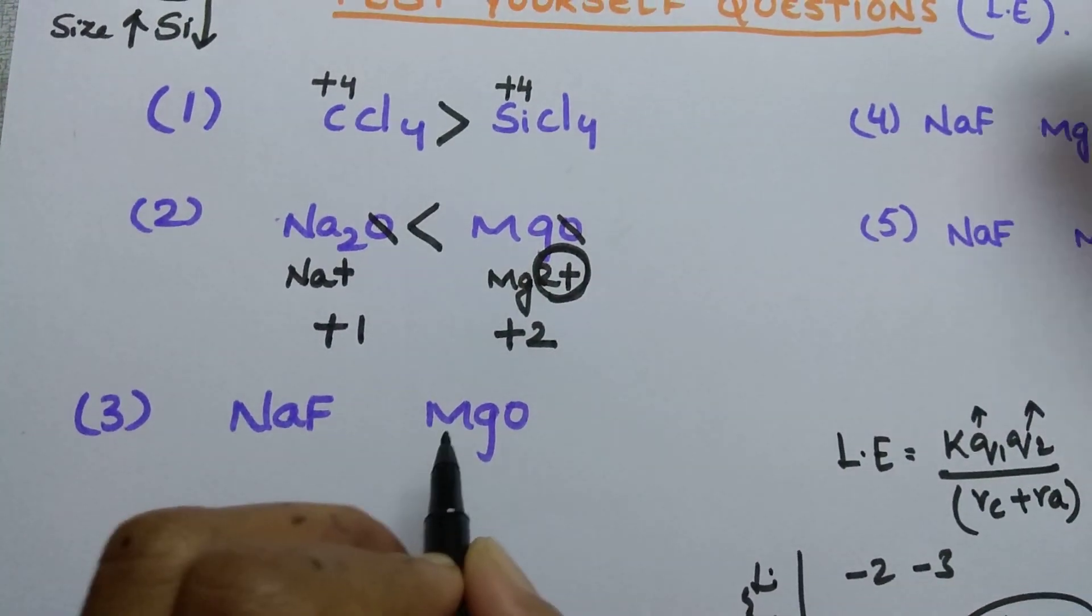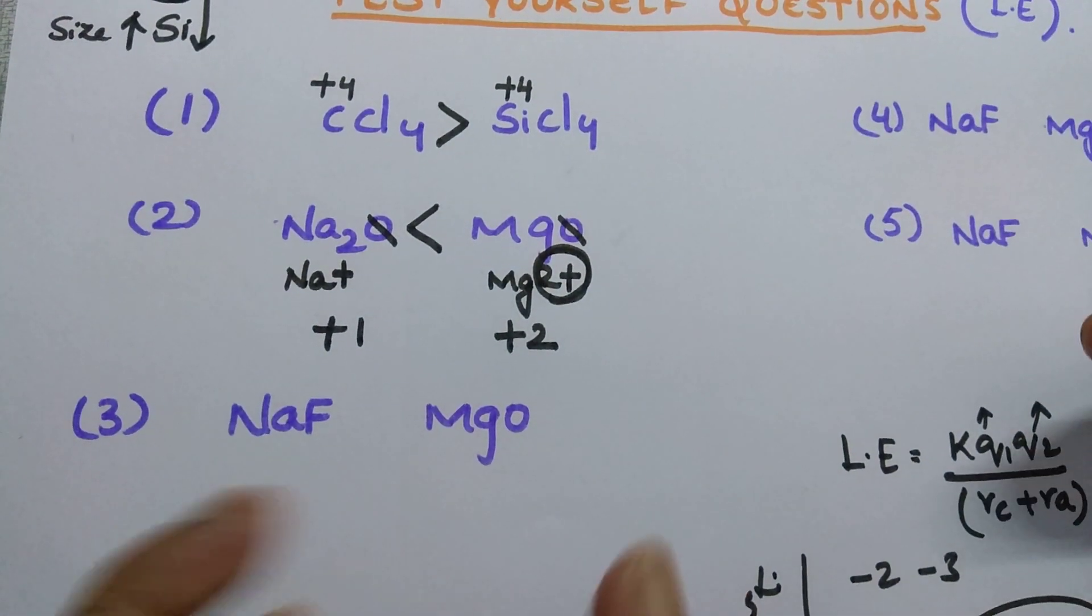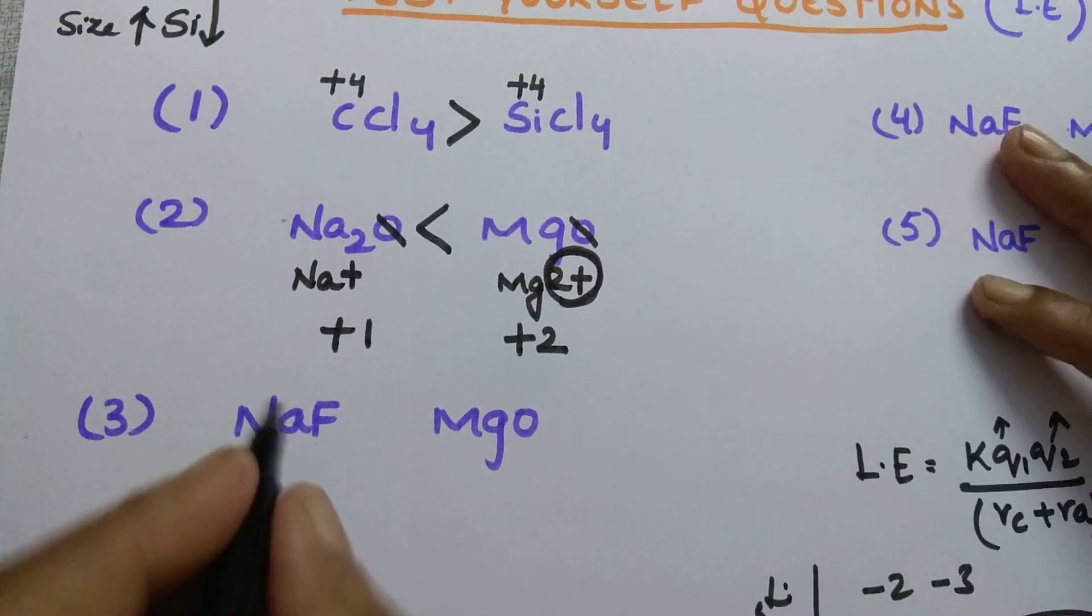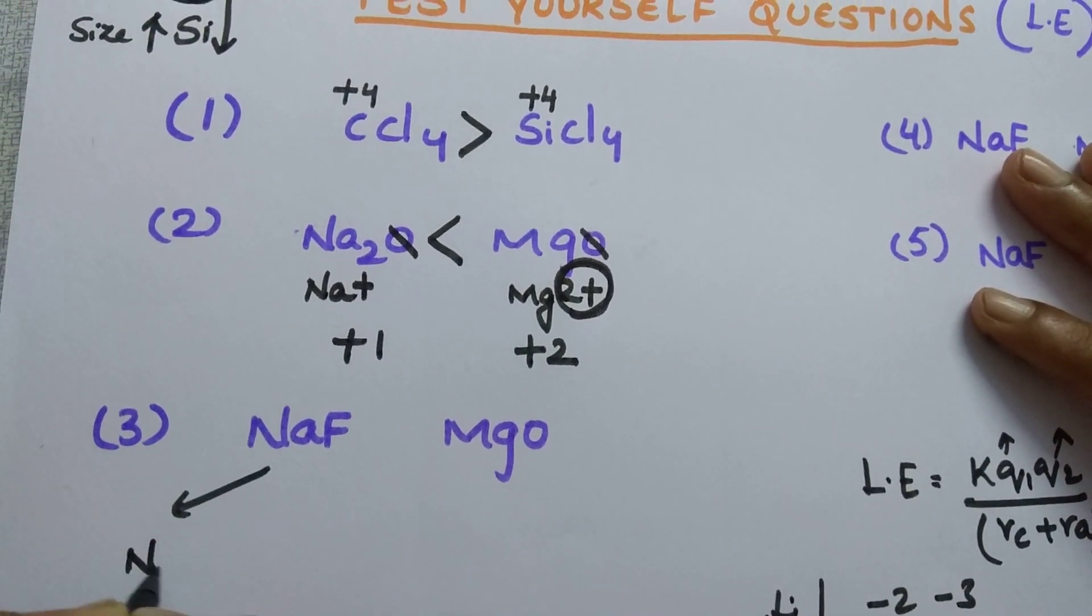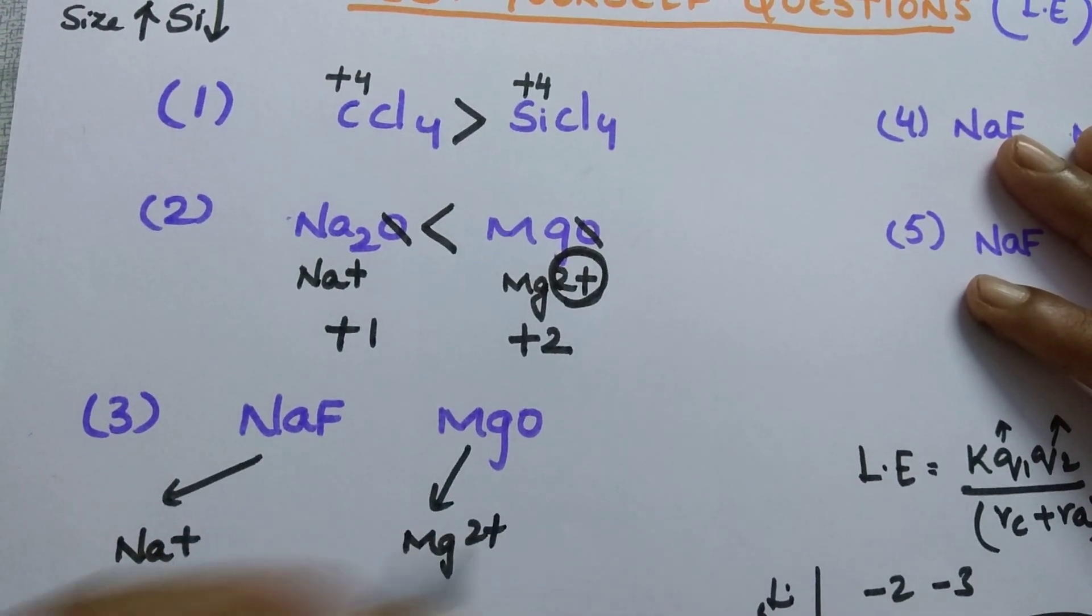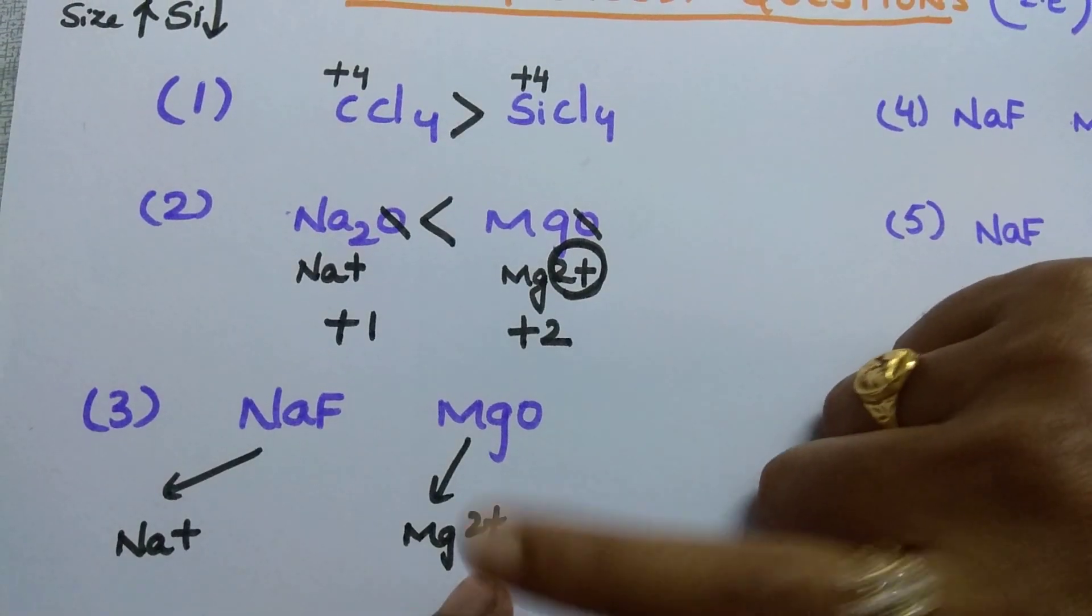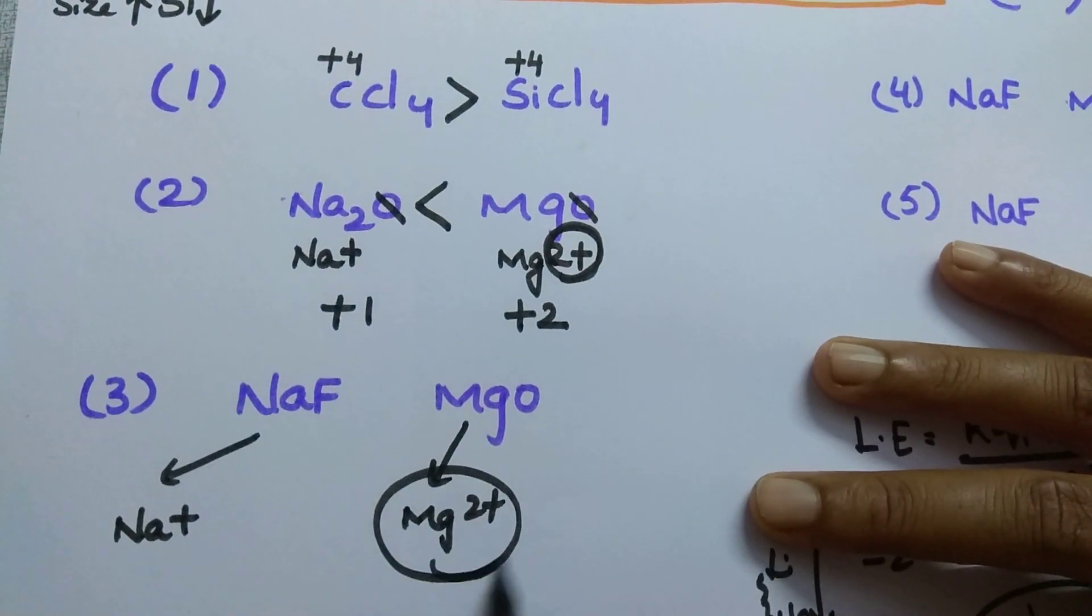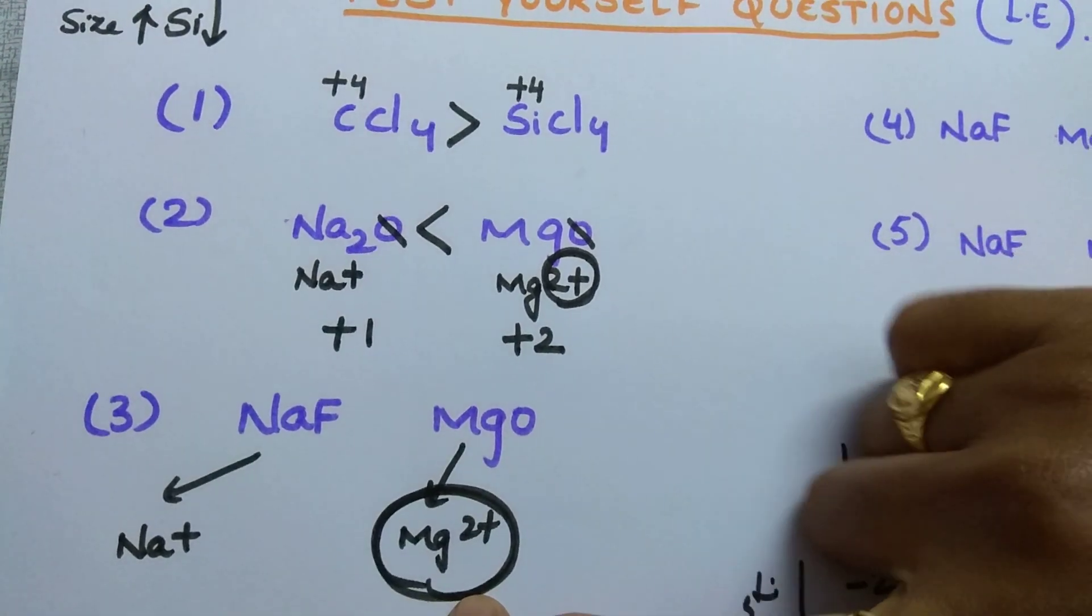Next one is NaF, MgO. In this case, I gave you both different cation and different anion. Then how you have to solve? See here, Na plus and it is having Mg2 plus. Which will be having higher lattice energy? In this case, the charge is more. So Mg2 plus is having more.